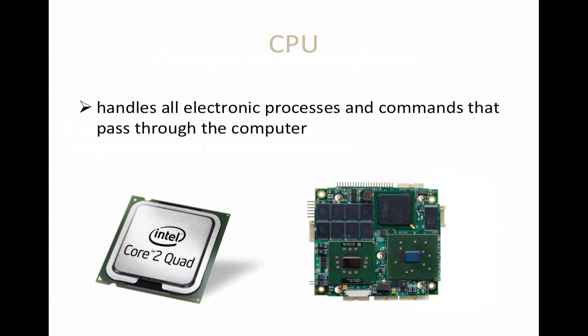Next is the CPU. This is very important — it's considered the brain of the computer. It handles all electronic processes and commands that pass through the computer. The speed of a CPU can be measured by how many cores or processors it possesses — it can consist of a dual or quad core processor. CPU speeds are currently measured in gigahertz; the more gigahertz, the faster the CPU.